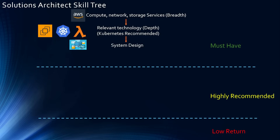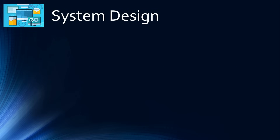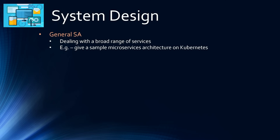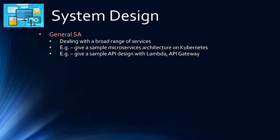The next thing you must know is different system designs — this is the bread and butter of solutions architects. You will face different system design questions both in interviews and in real-world projects. For a general SA, you will be dealing with a broad range of services. For example, if a customer is interested in Kubernetes, you should be able to give a sample microservices architecture showing a load balancer service and some pods running on a node. Similarly, if a project wants to go serverless, you should be able to give a sample API design with Lambda and API Gateway and explain the flow.